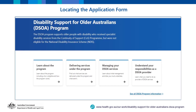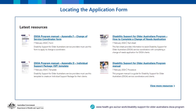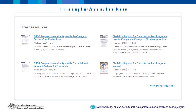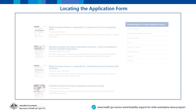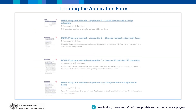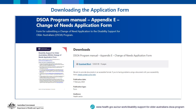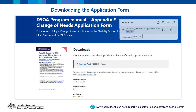The Change of Needs Application Form can be found on the Decelle website. This link will take you to the most recent version of the form. You will be required to scroll down until you see Appendix C. Download the form in Microsoft Word format, then click Open File to access the form.